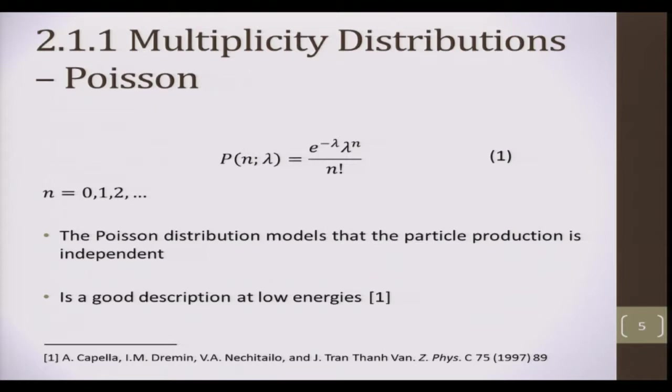In the early days with low energy collisions, the multiplicity data was well described by a Poisson distribution. This is simple to understand and very easy. It only has a single parameter, the mean. The Poisson distribution also has the charming property that the mean and the variance are equal. But nature's a little bit more subtle than that.